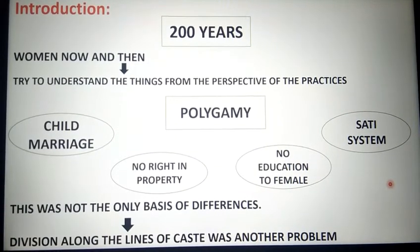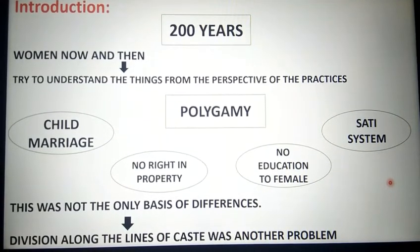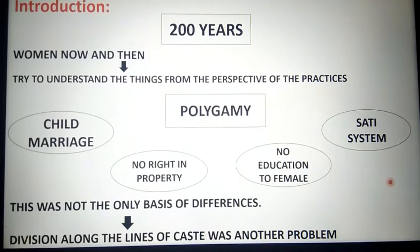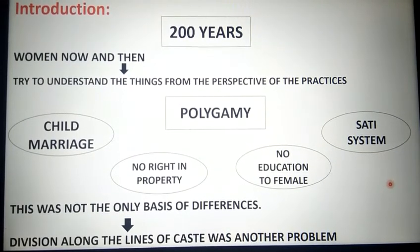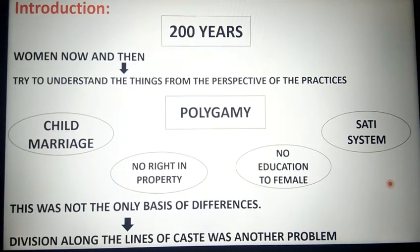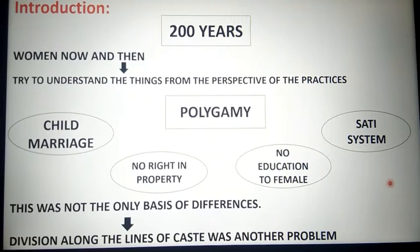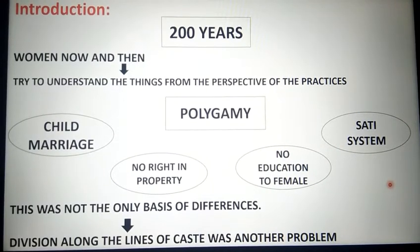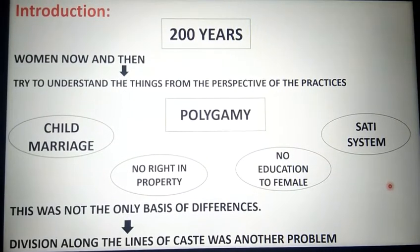In this chapter we'll talk about child marriage, polygamy, no right in property, no education for females, and the sati system. These were a few of the practices followed at that time. On the basis of these, we'll compare and understand what treatment women received.